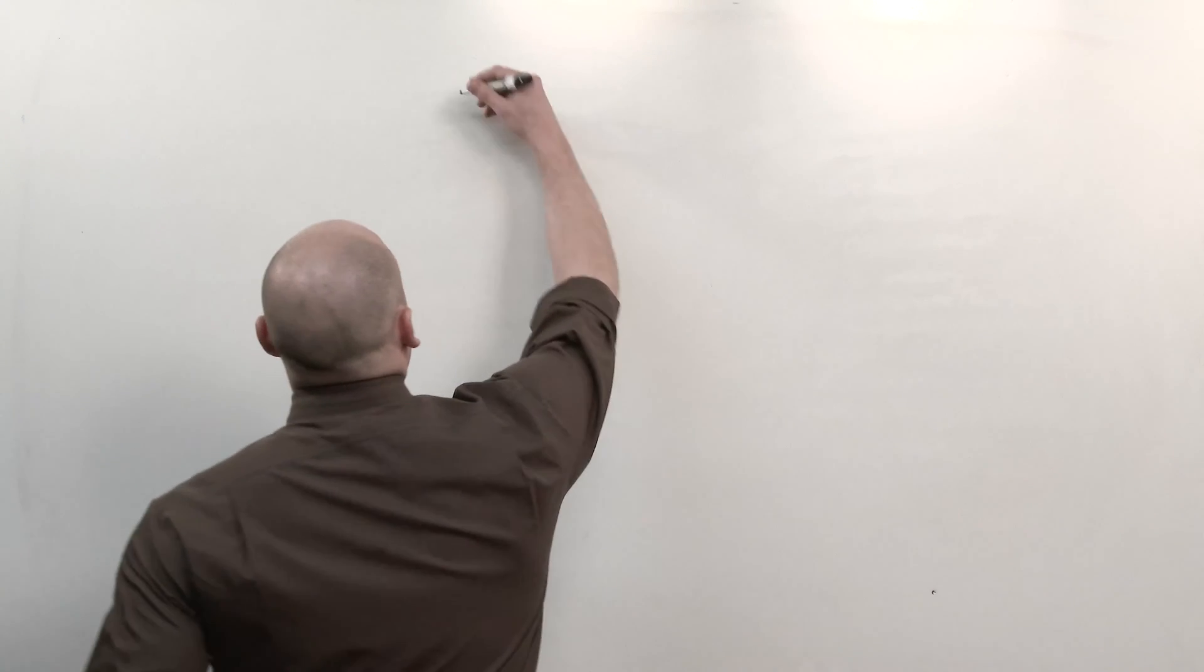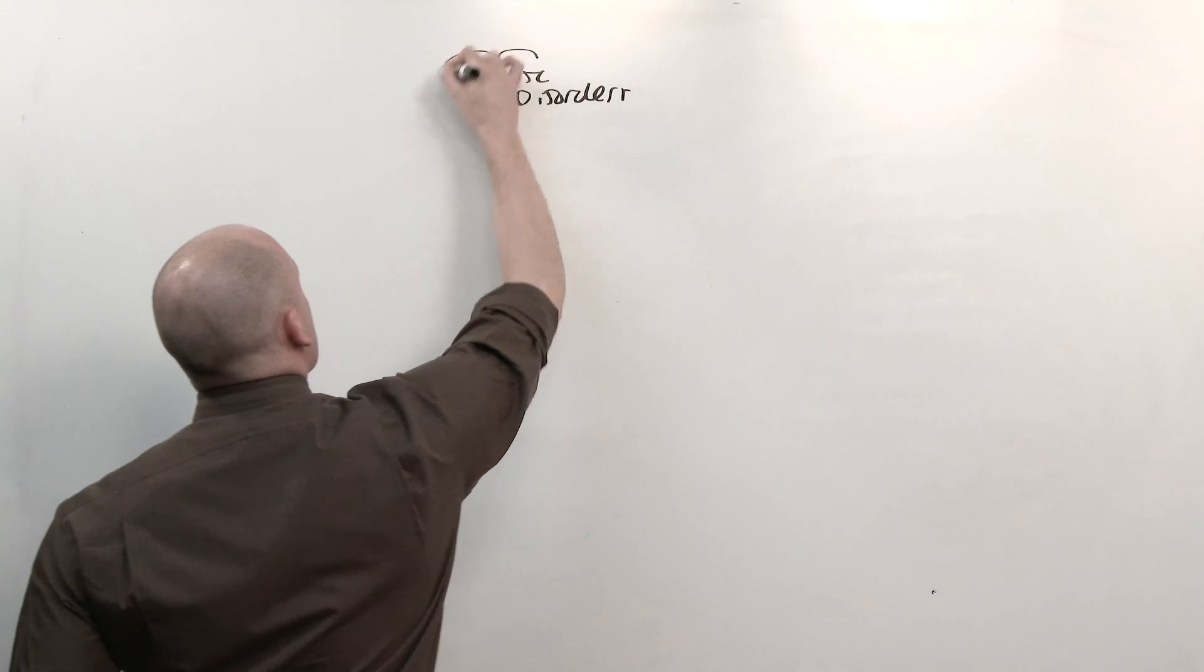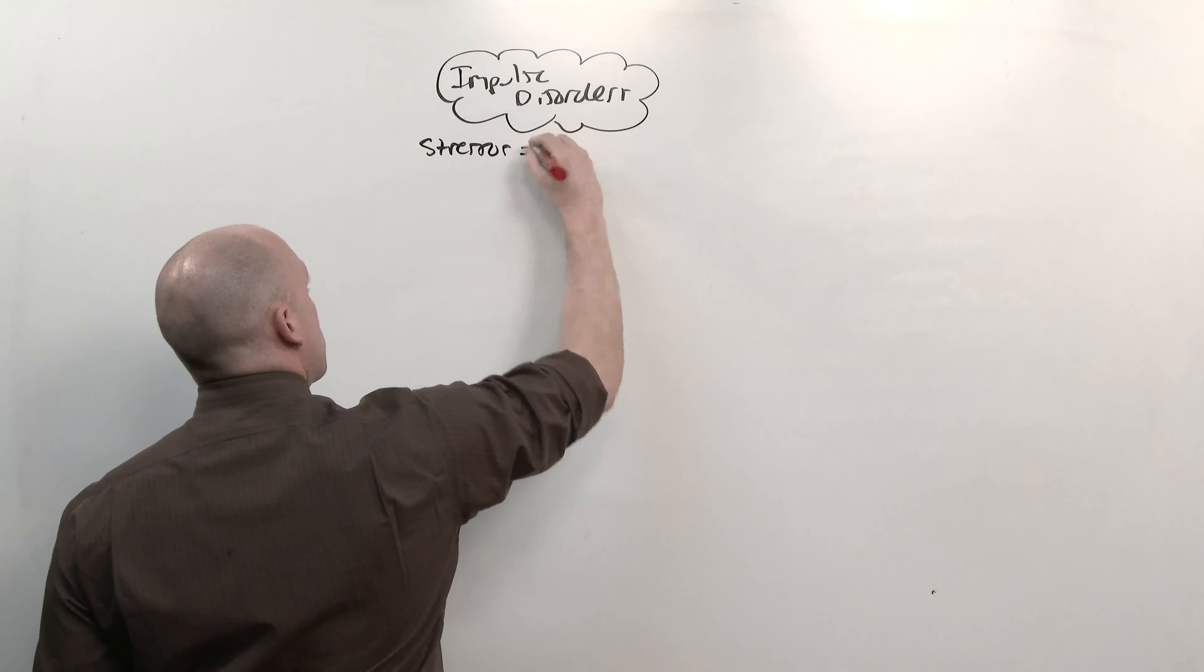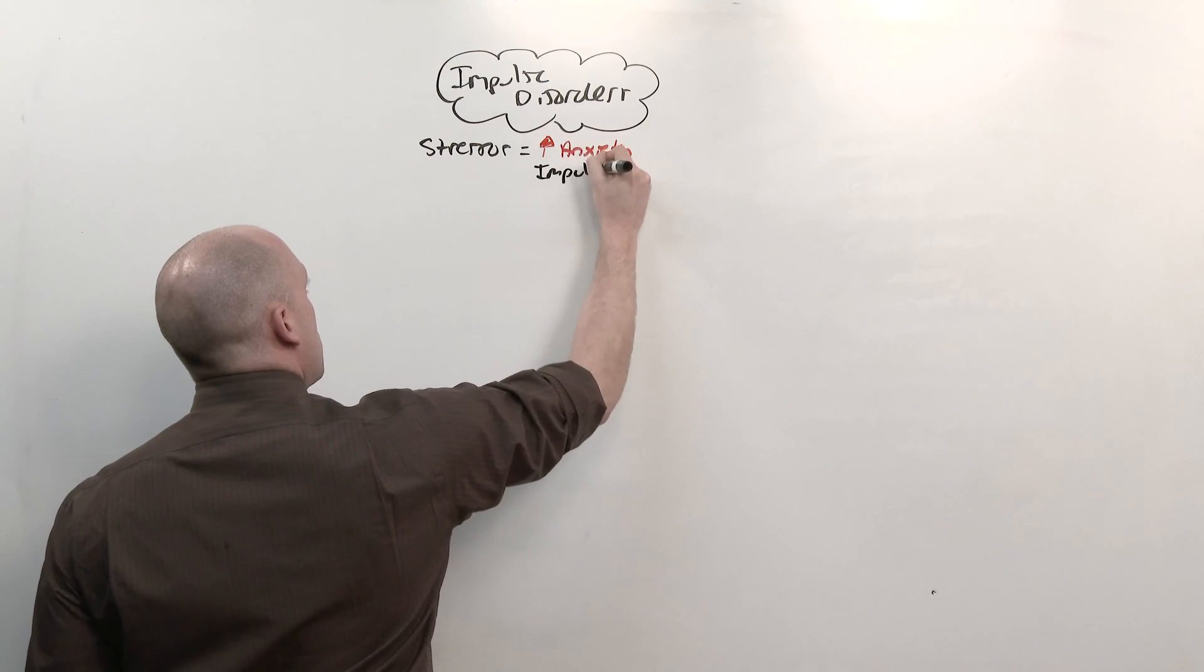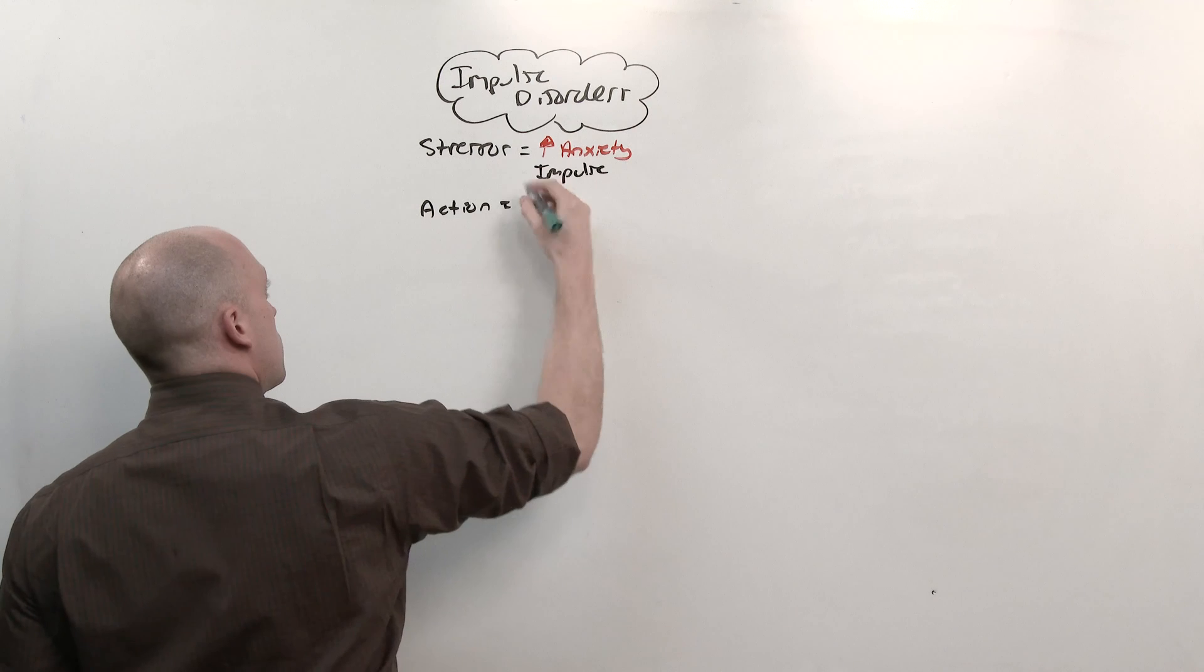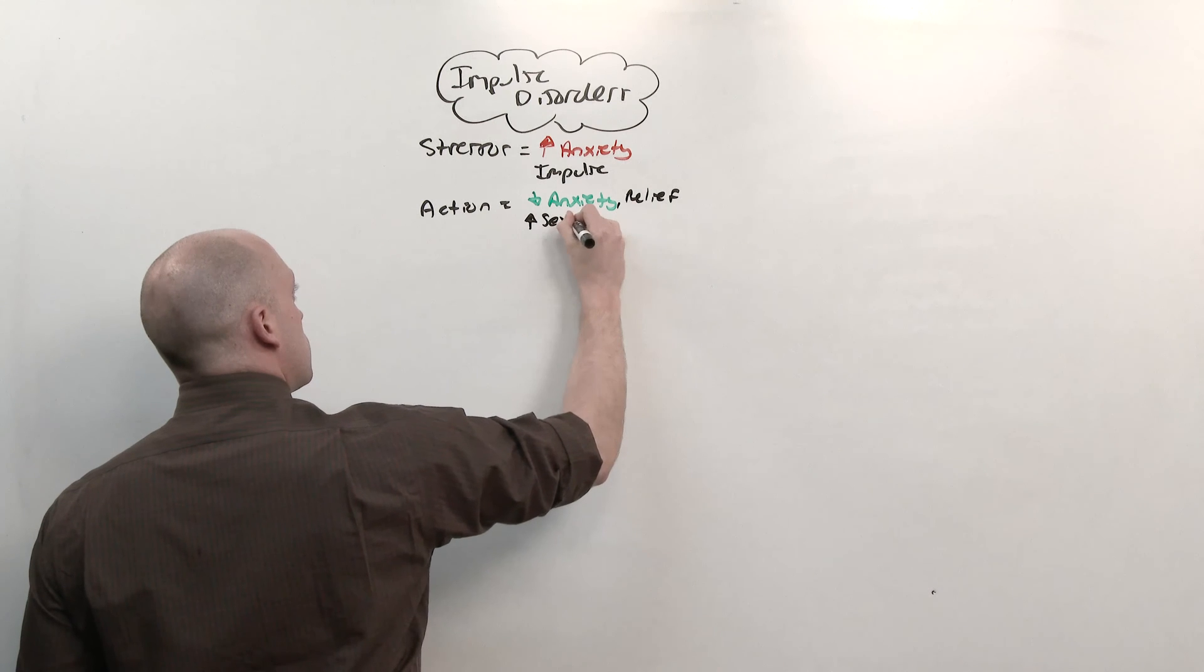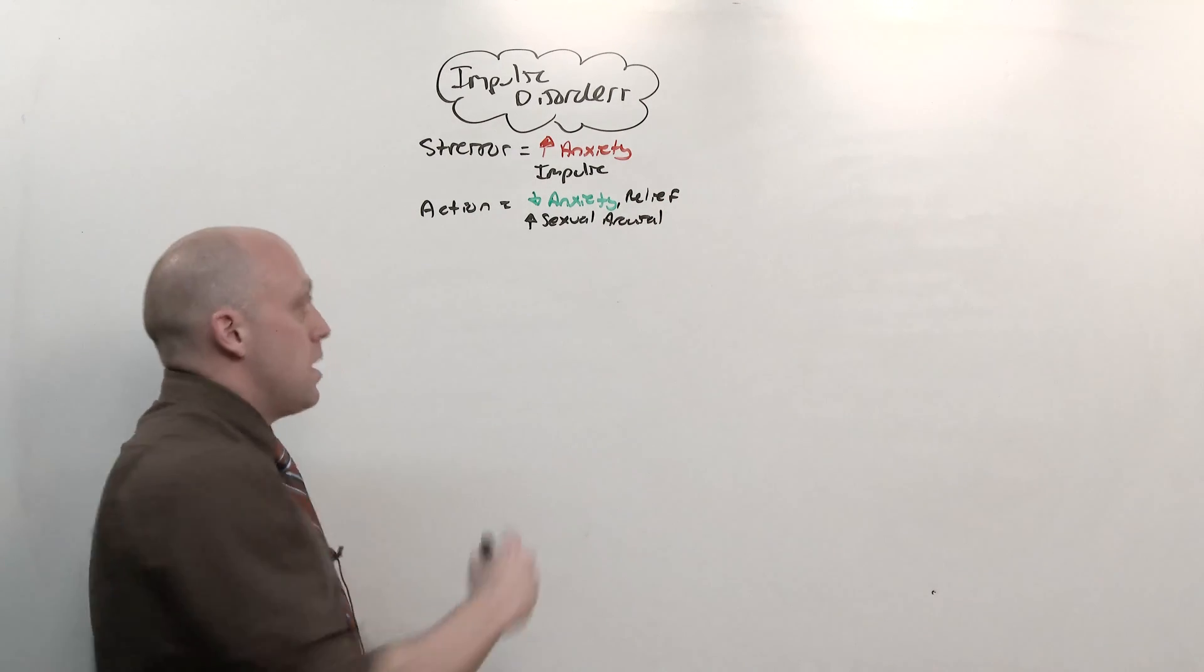Let's start off with wet impulse disorders in general, showing the parallels to anxiety. All right, so there is some stressor, and that is going to be anxiety-inducing. It causes some impulse to commit the action. When the person commits the action, there is a reduction in that anxiety. There is relief, or there may even be an increase in sexual arousal.